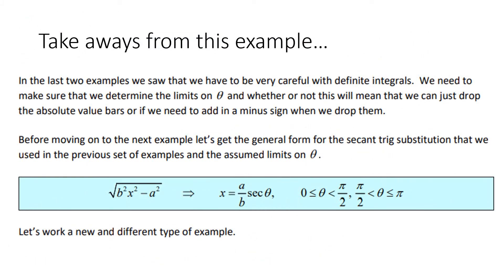The takeaway from this example: we have to be very careful with definite integrals — the limits matter. The key pattern is that if you encounter the square root of b²x² minus a², the substitution x = (a/b) sec θ is worth considering. Just be sure to stay away from θ = π/2.